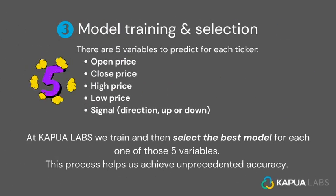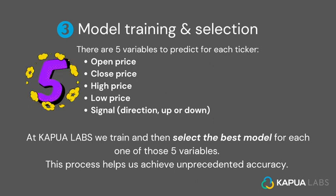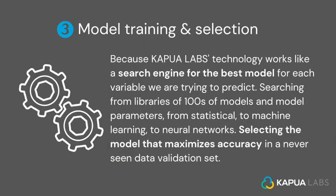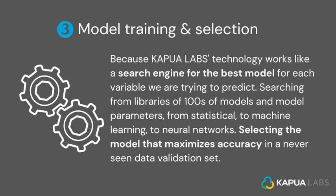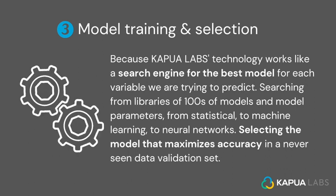Step number three: model training and selection. There are five variables to predict for each ticker: open, close, high and low price, and the signal. At Kapua Labs, we train and then select the best model for each one of those five variables. This process helps us achieve unprecedented accuracy. Kapua Labs technology works like a search engine for the best model for each variable, searching from libraries of hundreds of models and model parameters — from statistical to machine learning to neural networks — selecting the model that maximizes accuracy in a never-seen data validation set.